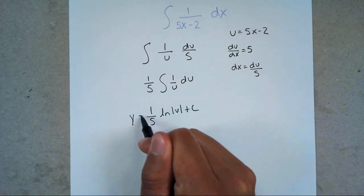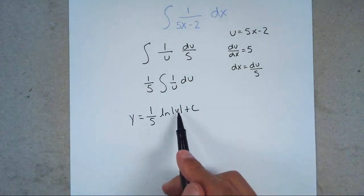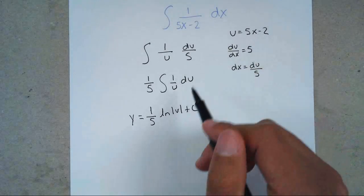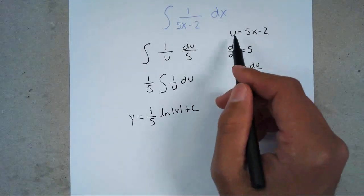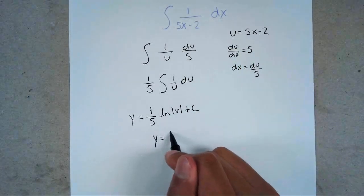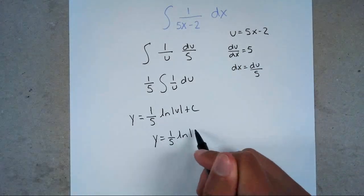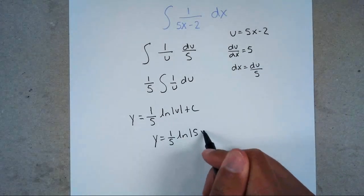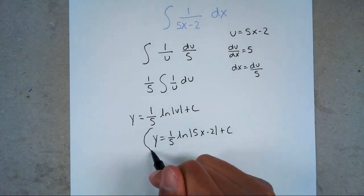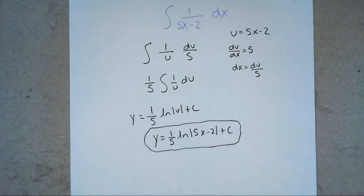And that's my anti-derivative. But the problem is I don't want it in terms of u — I always want it in terms of x. So what is u equal to? u equals 5x minus 2. So the final answer is y equals (1/5) ln absolute value of (5x minus 2) plus C. And this is my anti-derivative.